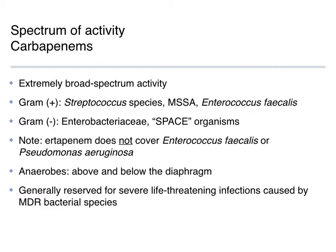Carbapenems cover both above- and below-the-diaphragm anaerobes — including Bacteroides fragilis — so practically everything you'd want to cover. There are absolutely situations where you want to use these drugs, especially in severely ill patients in the empiric phase of therapy where you don't know what you're treating. But they also have the potential to be overused in situations where you don't need quite that large amount of coverage.